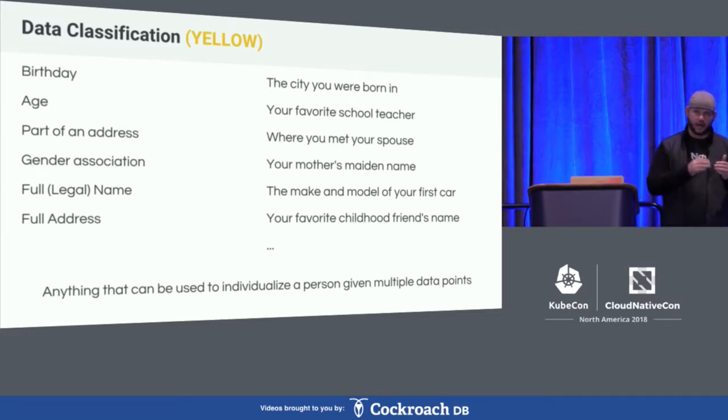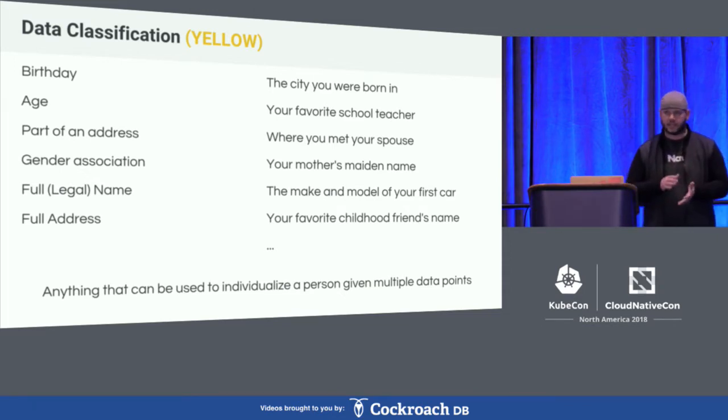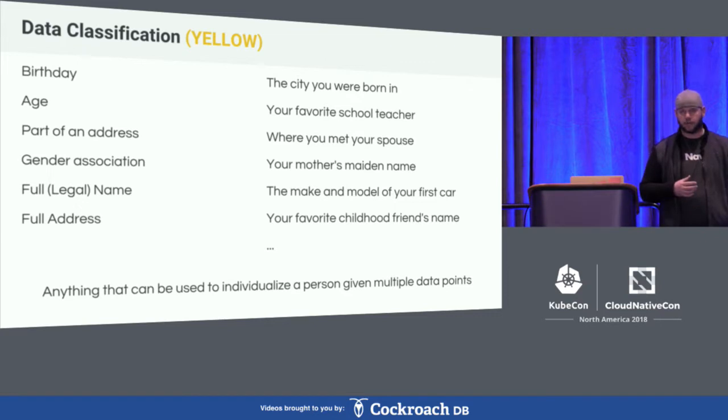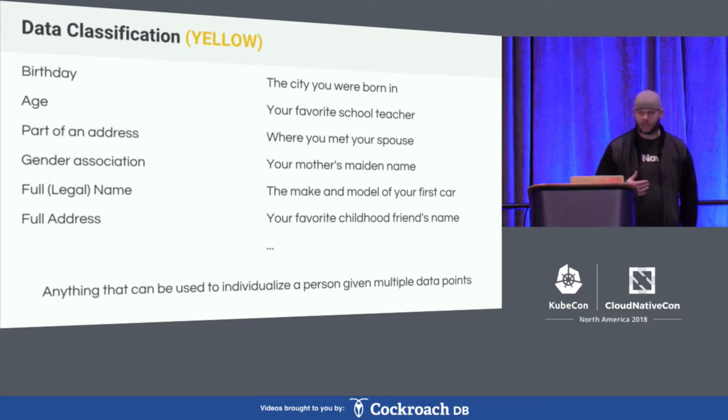Yellow data is data that, taken individually, is really hard to personalize to a particular person. For example, make and model of your first car — I could say Toyota and there could be a million other people who bought a Toyota first. But with yellow data, if you start combining a lot of these together it starts falling more into the realm of red data. So if you're going to be sending information in bulk about someone, you have to treat it like red data because it can be used to identify that person.